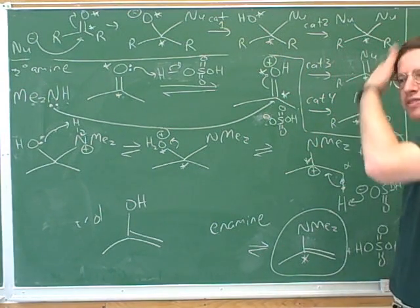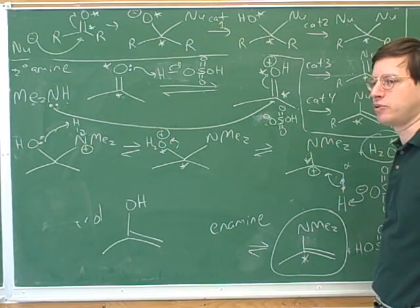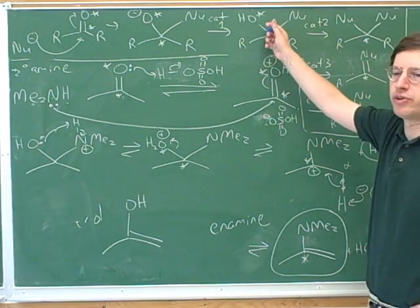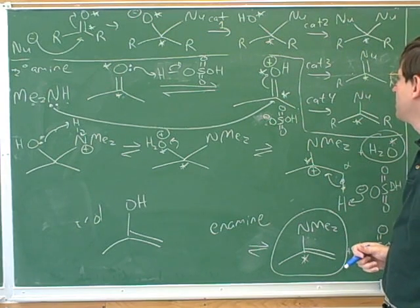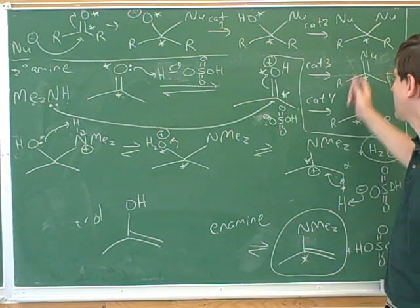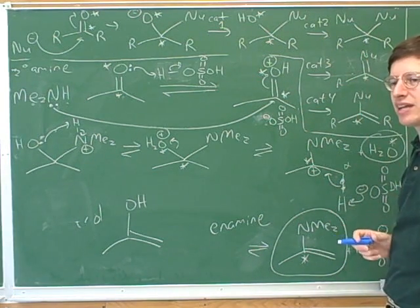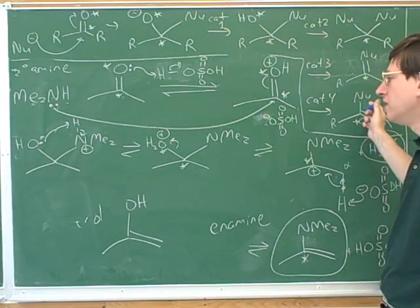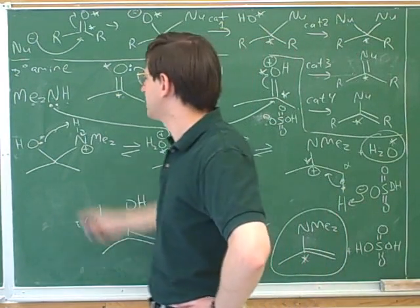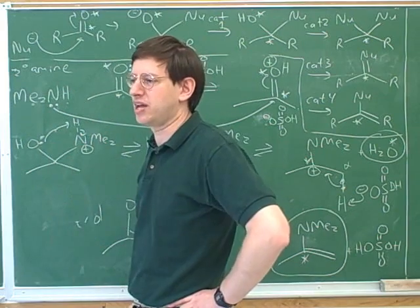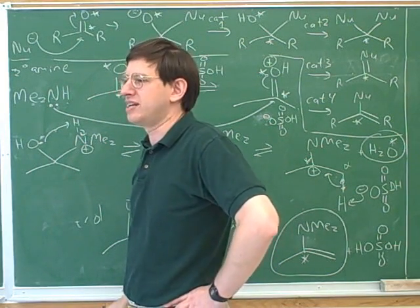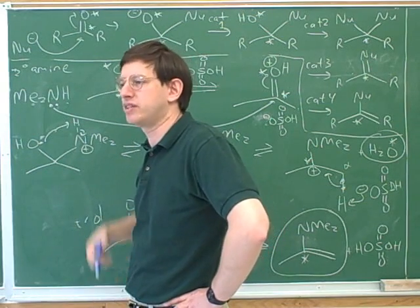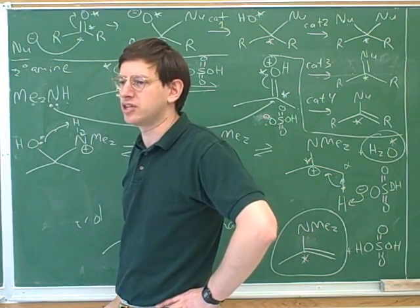So different types of nucleophiles give you different types of categories. For example, we've seen that Grignards and hydrides give us category one. We've seen that alcohols give us category two. We've seen that ammonia and primary amines give us category three. And now we've seen that secondary amines give us category four. Tertiary amines don't really give us an interesting nucleophilic attack because they don't have any protons to lose. And all those different types of things are covered in the handout. If you look at each category, it says what's the type of nucleophile that will give you each of the categories.